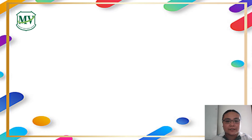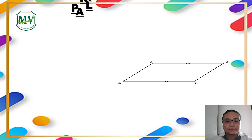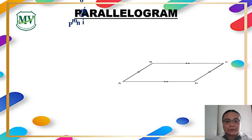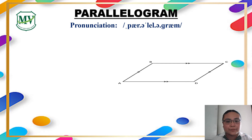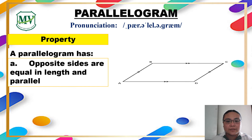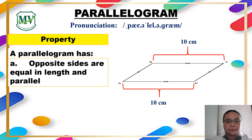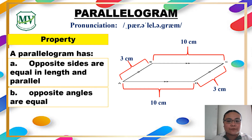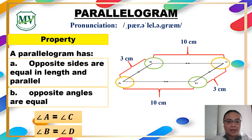Next is parallelogram. What are the properties of a parallelogram? If rhombus is the same as a square in terms of side length, parallelogram is the same as a rectangle — only the opposite sides are equal in length and are parallel with each other. The opposite angles of a parallelogram are equal: angle A equals angle C, and angle B equals angle D.